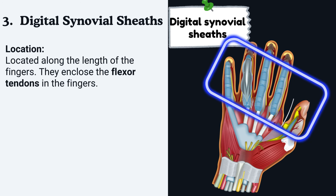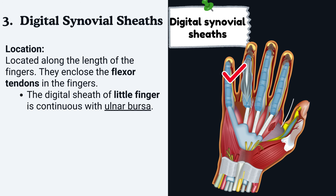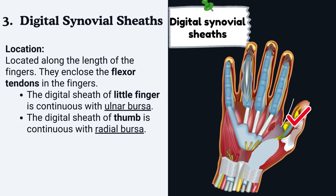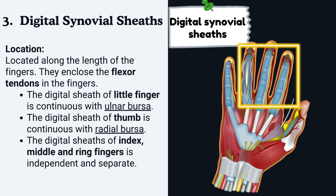Lastly, the digital synovial sheaths of fingers. Location — they are located along the length of the fingers and enclose the flexor tendons in the fingers. The digital sheath of the little finger is continuous with the ulnar bursa, and the digital sheath of the thumb is continuous with the radial bursa.